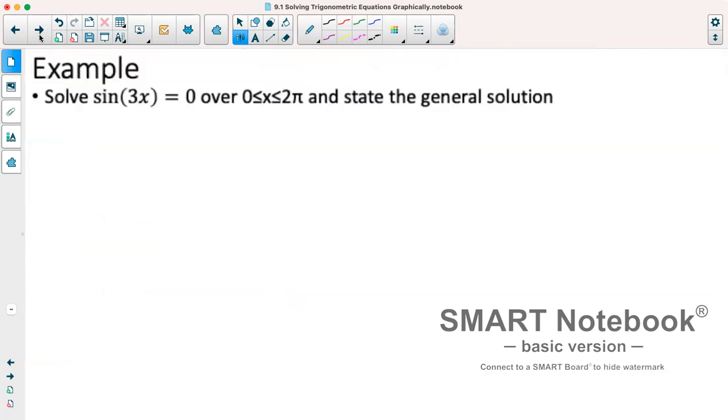Next example: we've got sin(3x) = 0 from 0 to 2π and state our general solution.